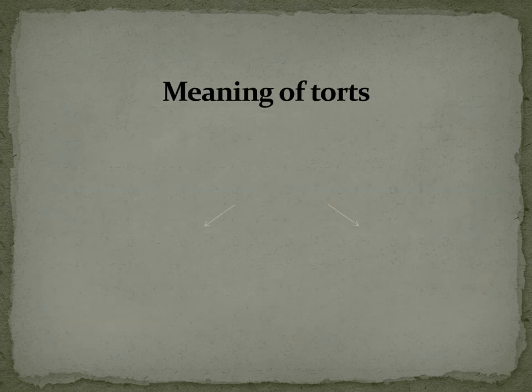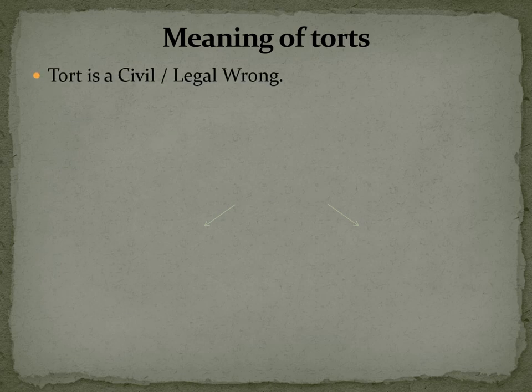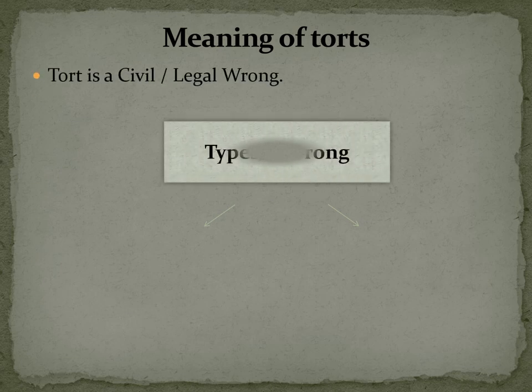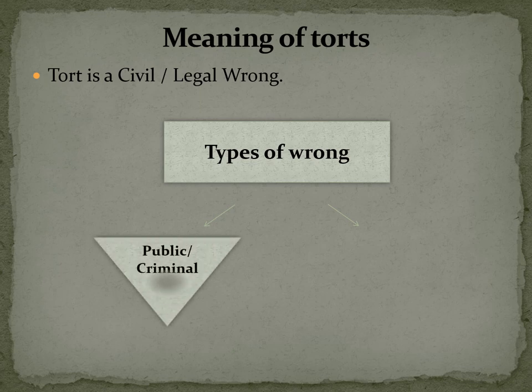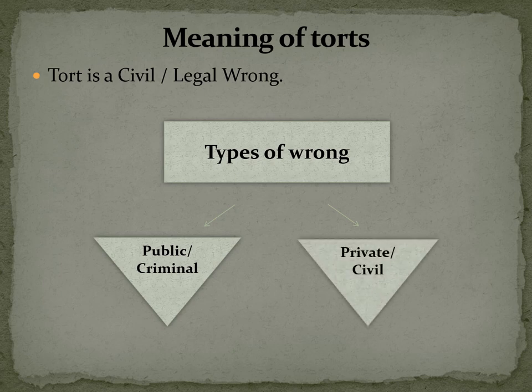So let's understand the meaning of torts. Tort is a civil wrong. Now what is wrong, and how many types of wrong are there? There are two types of wrong: the first one is public or criminal wrong, and the second is private or civil wrong. And as I said, tort is a civil wrong.